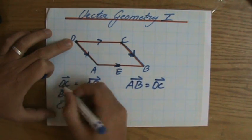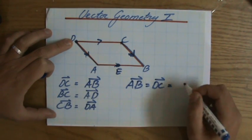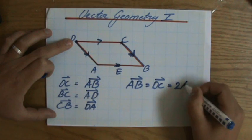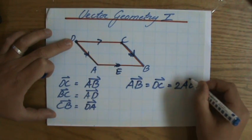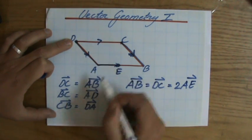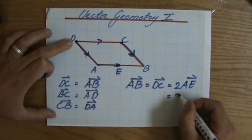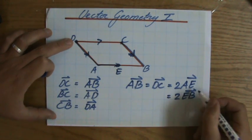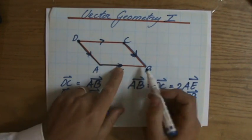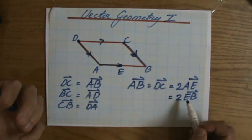2 times EB, because E is exactly in the middle. Again, the direction matters, so AB is the same as 2 times AE. It would not be the same as 2 times EA because that